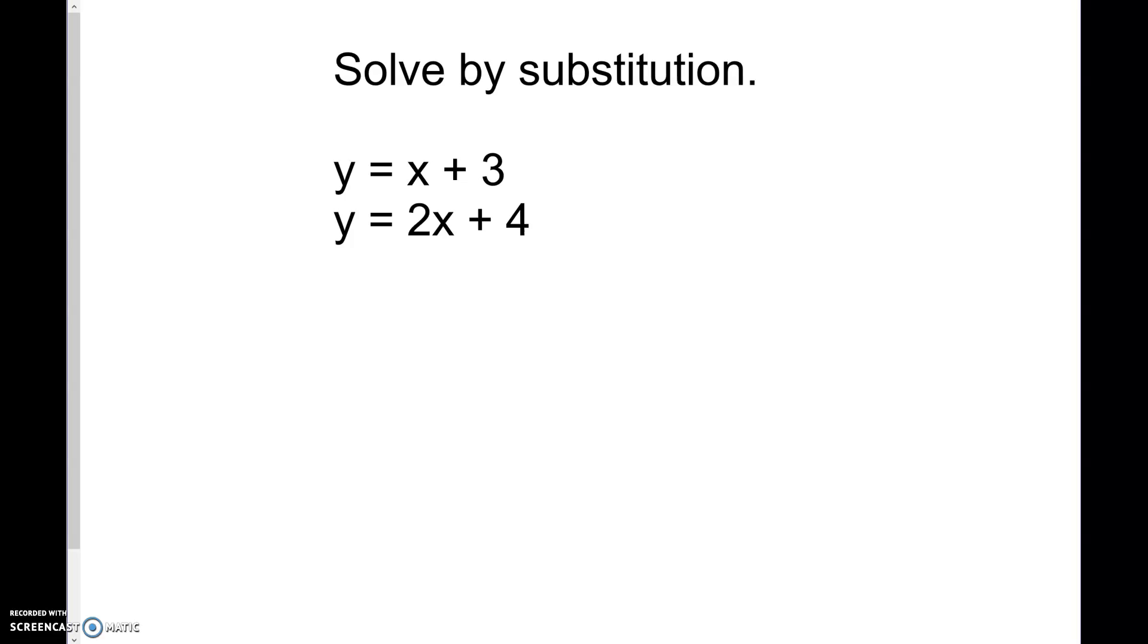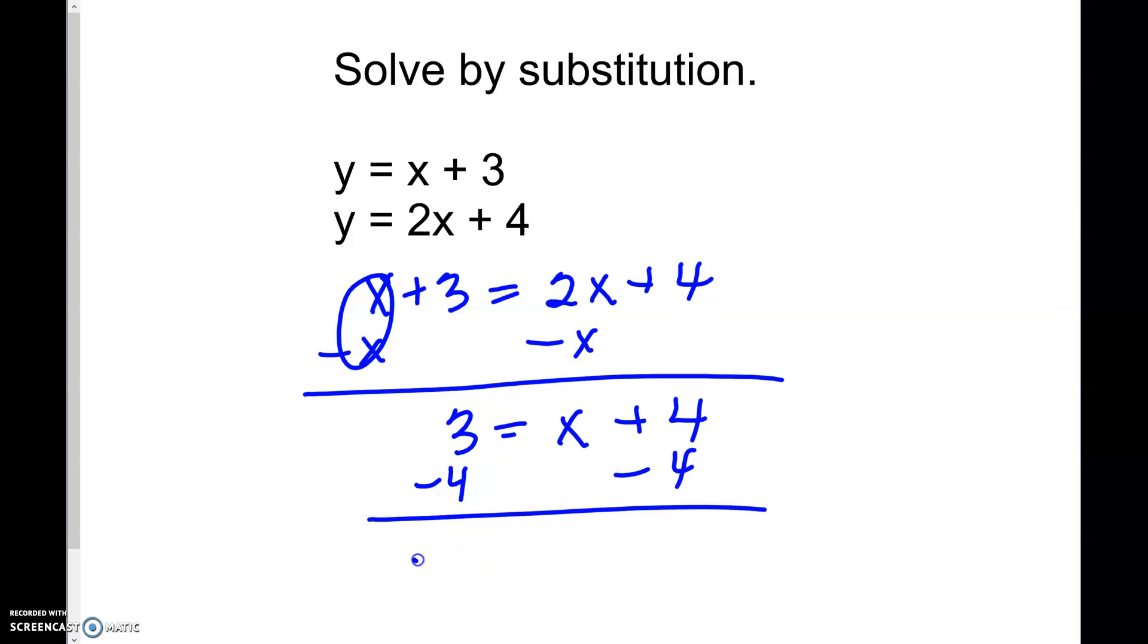Copy this one down, and then resume your video and let's get started. So I've got y equals and y equals. So if both of them are y equals, that means that x plus 3 is equal to 2x plus 4. I'm going to combine like terms. I'm going to subtract x from both sides. So these are going to cancel, and I get 3 equals x plus 4. Now when I subtract 4 from both sides, I get negative 1 equals x. So I have half my answer, negative 1, and I'm going to put a negative 1 in here. Negative 1 plus 3 is 2, so that means my y value is 2. So the solution here is (-1, 2).